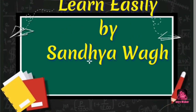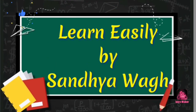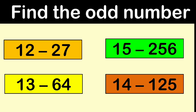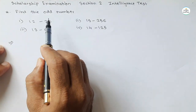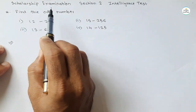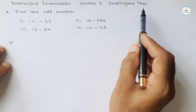Hello everyone, I am Santosh and welcome to the channel. In this video we will see a question for the scholarship examination under the intelligence test. There is also a practice question for you at the end of this video — try to answer in the comment section and I will give the answer in the next video. Let's start. The question is: find the odd number. This is from the scholarship examination, Section 2, Intelligence Test.